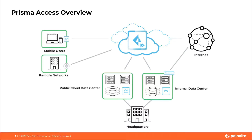Prisma Access sits in the middle of your data center or your headquarters, your mobile users and remote networks, and the internet. This allows Prisma Access to inspect all traffic in order to identify applications, threats, and content, and it provides visibility into the use of SaaS applications and the ability to control which SaaS applications are available to your users. Being a cloud service also allows you to avoid the challenges of figuring out what type of hardware to buy or how much compute to allocate, because this is all provided as part of the service.